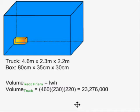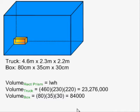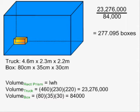The volume of a box is 80 times 35 times 30, which is equal to 84,000 cubic centimeters. All we have to do is divide 23,276,000 by 84,000, and we can see that we should be able to fit 277.095 boxes in this truck. This answer is given after rounding off to the nearest thousandth.